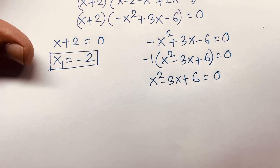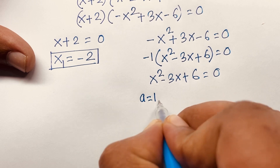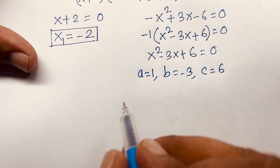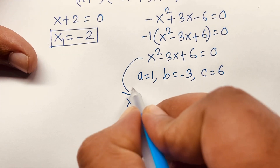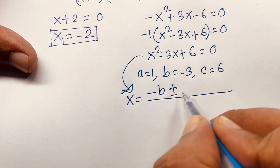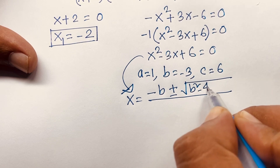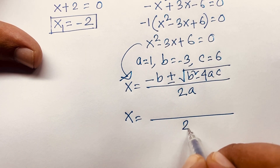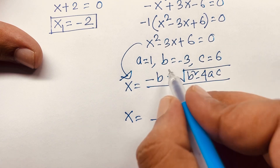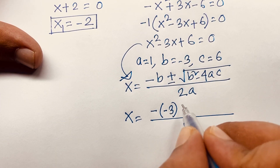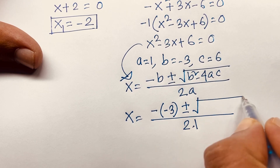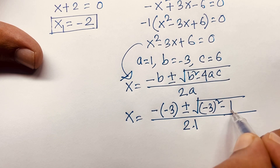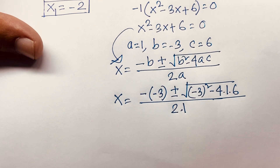For the quadratic x squared minus 3x plus 6 equals 0, we identify a equals 1, b equals −3, and c equals 6. Applying the quadratic formula: x equals negative b plus or minus square root of b squared minus 4ac, all over 2a.